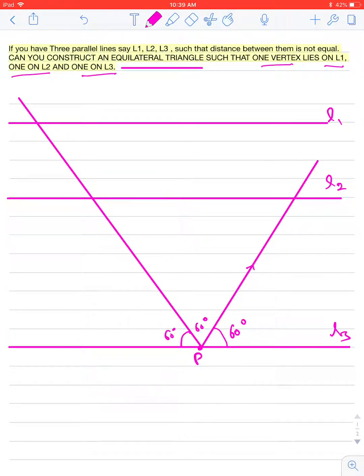Let this line cut L2 at a point B, and this line cut L1 at a point C. Now join BC.